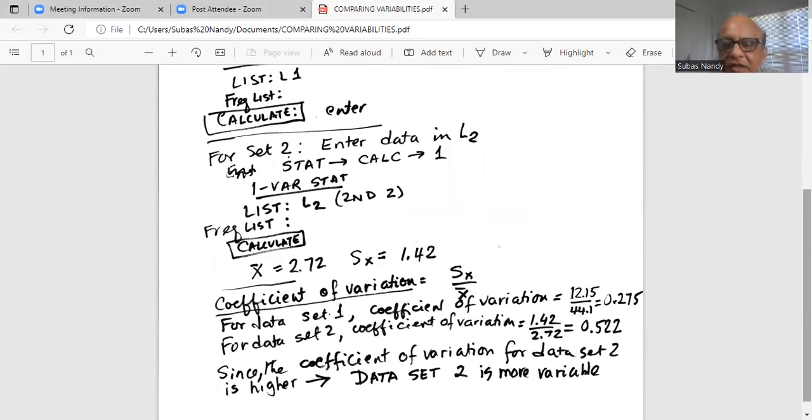A lot of variability in the second data set. For data set 1, on the other hand, the sample standard deviation is only 27.5 percent of the mean. Therefore, data set 2 is more variable.